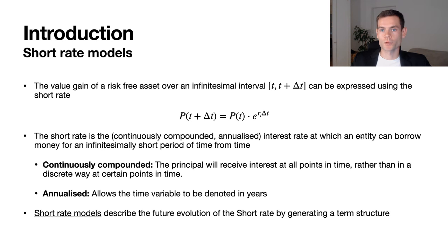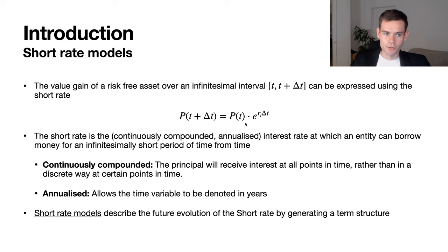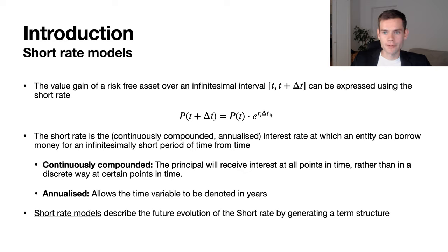First of all, we want to describe what a short rate is and give an introduction to short rate models in general. We can think of short rates as the continuously compounded and annualized interest rate at which an entity can borrow money for an infinitesimally short period of time. We have that illustrated by means of an equation: the price of a risk-free asset at time t plus delta t equals the price at initial time P(t) times the exponential of the short rate r(t) times the time interval delta t. The short rate tells us how much value gain occurs over a short time interval when investing in a risk-free asset, and it is continuously compounded since interest rate payments happen continuously.